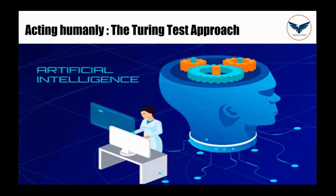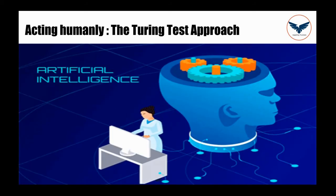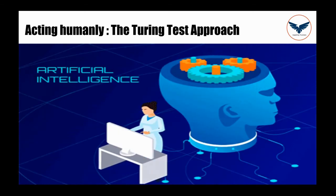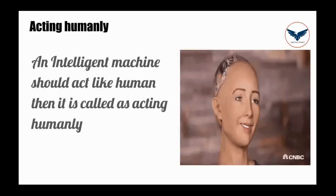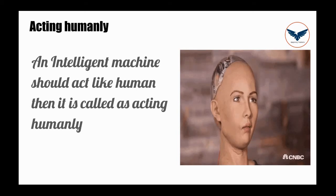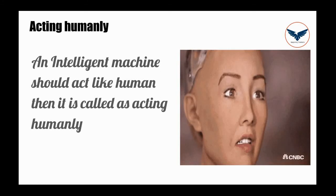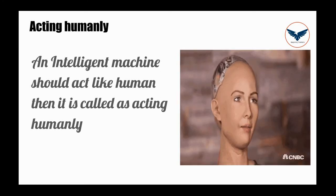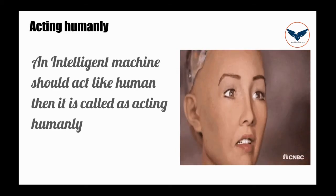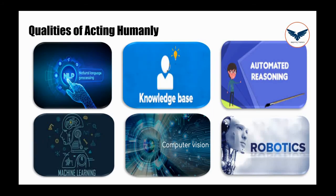First we will take acting humanly. We know that artificial intelligence is about making intelligent machines, but with respect to this aspect, the artificial intelligence means whatever intelligent machines we implement should act like a human. If a machine wants to act like a human, then the following qualities should be there: natural language processing, knowledge base, automated reasoning, machine learning, computer vision, and robotics.